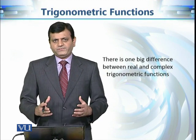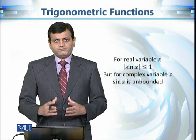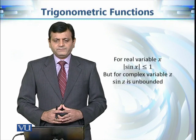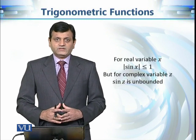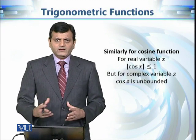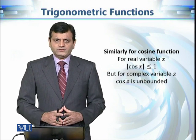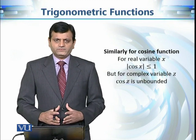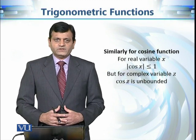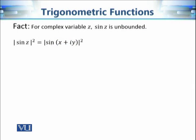Now let us discuss one big difference between the real and the complex case. In the real case, |sin(x)| ≤ 1, so sine is bounded. But in the complex case, sin(z) is an unbounded function. The same holds for cosine: in the real case |cos(x)| ≤ 1, but in the complex case cosine is also unbounded.